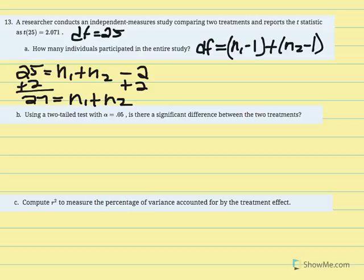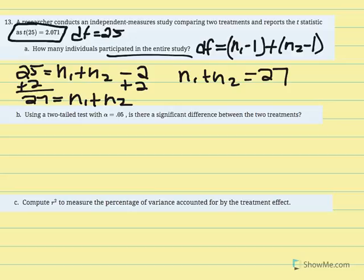Adding 2 to both sides: 27 equals n1 plus n2. We don't need to know each individual sample size — the total number of participants across both samples is 27. When final statistics are reported, what's in parentheses indicates the degrees of freedom for the test performed.